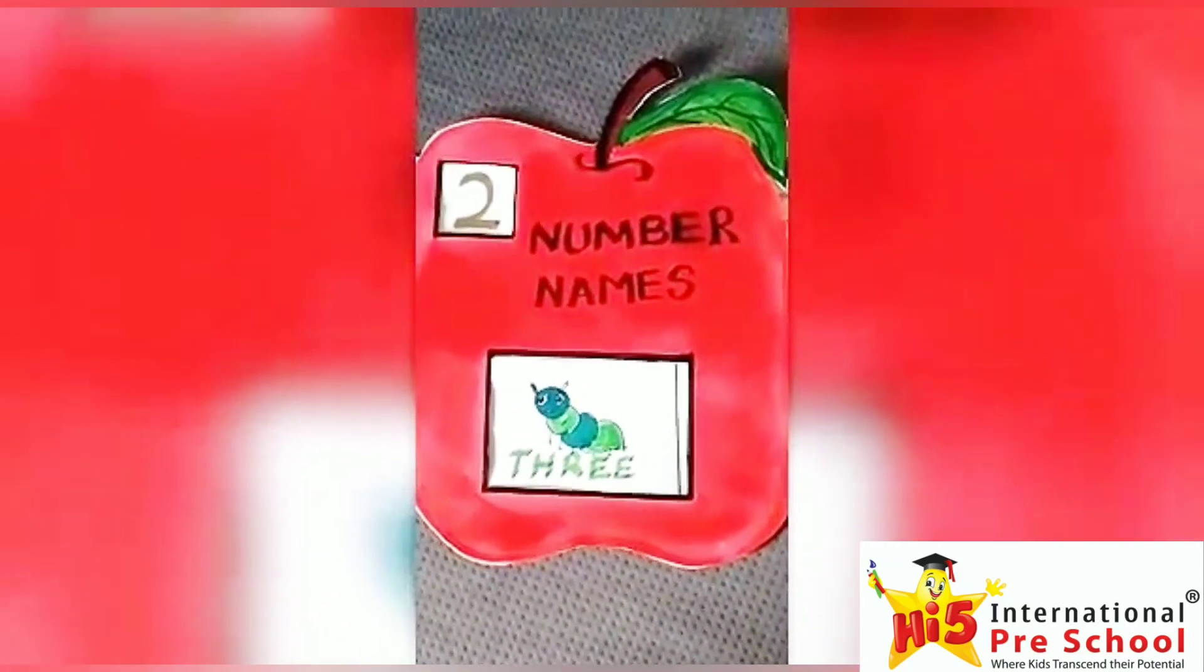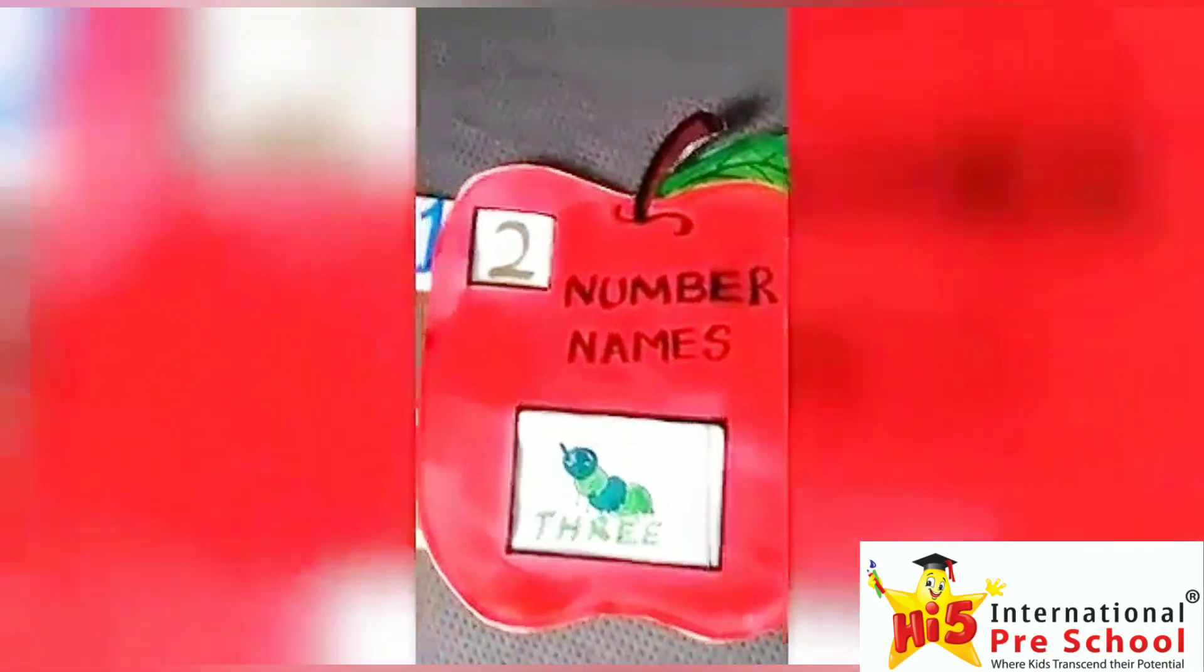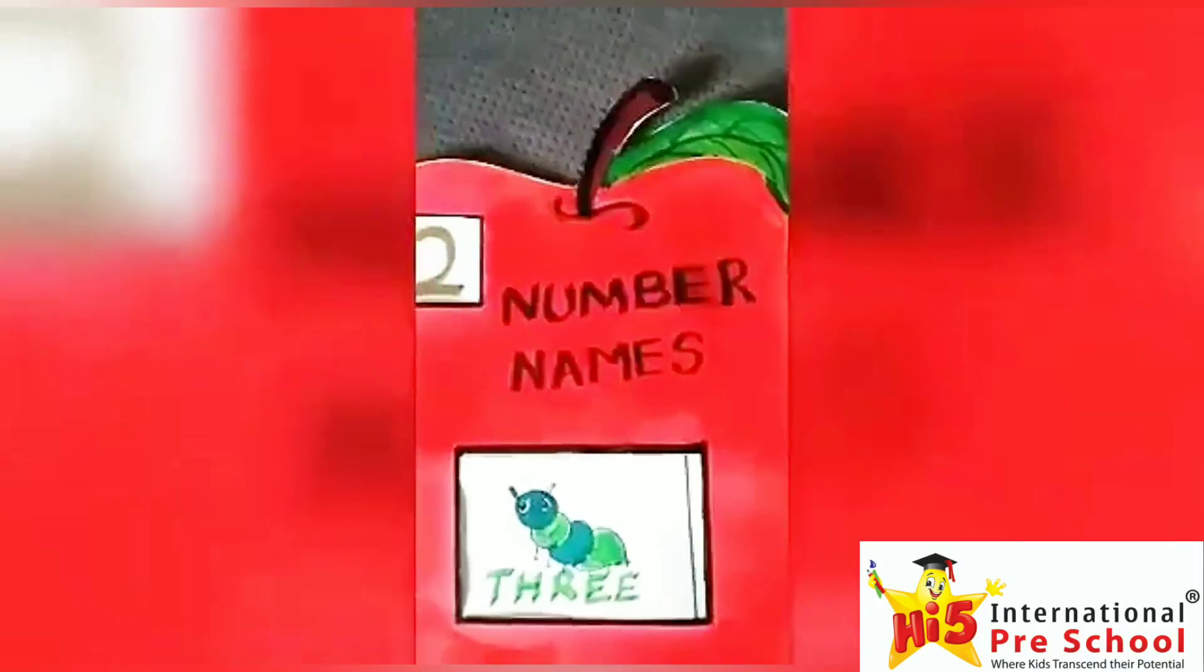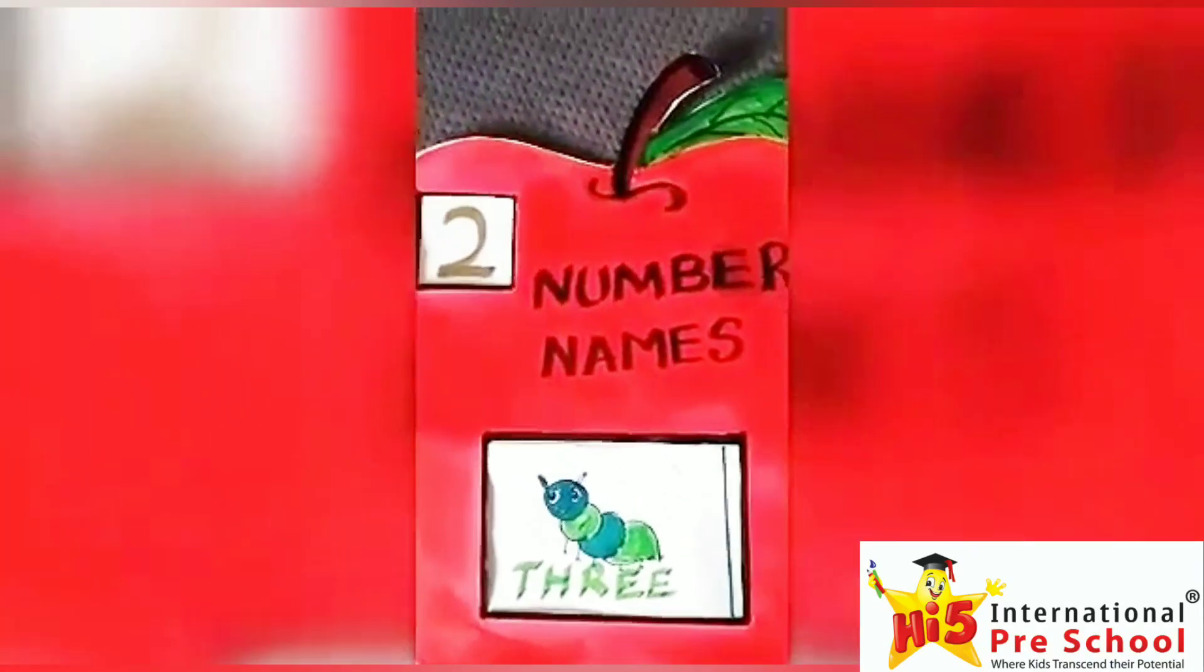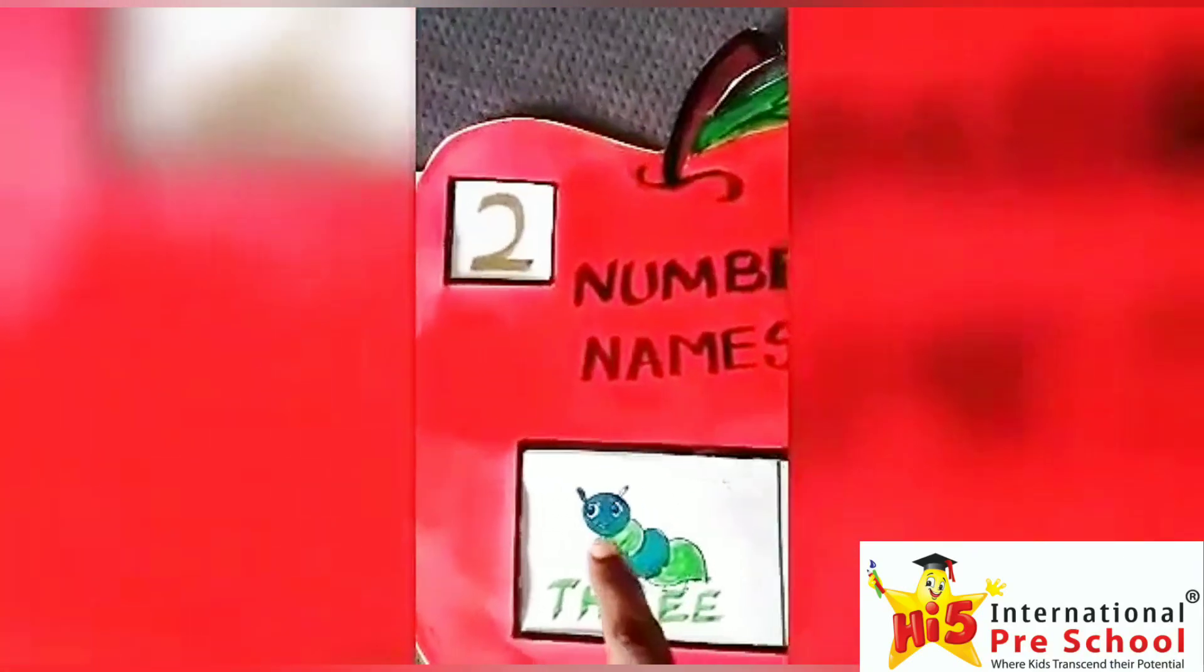This is how it looks. Can you see the number at the top? It's 2. Now, you can see a caterpillar in the bottom opening. Shall we count the compartments?